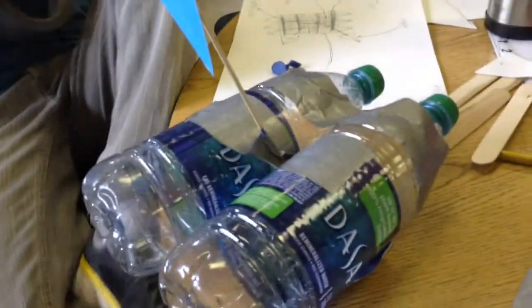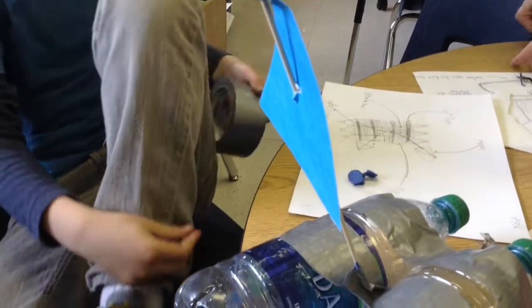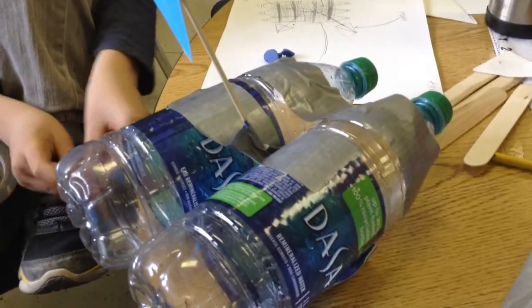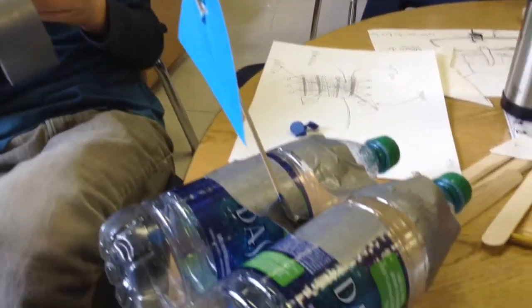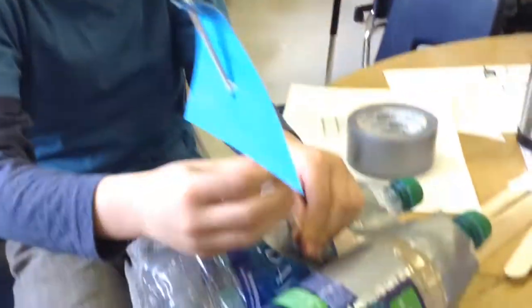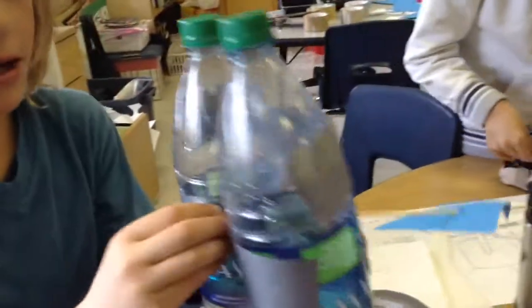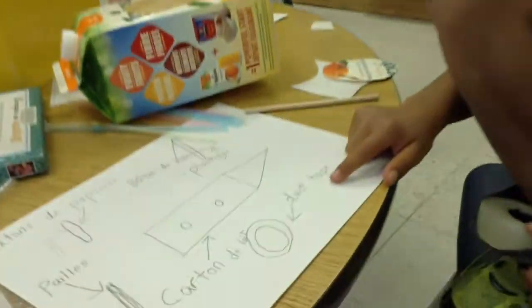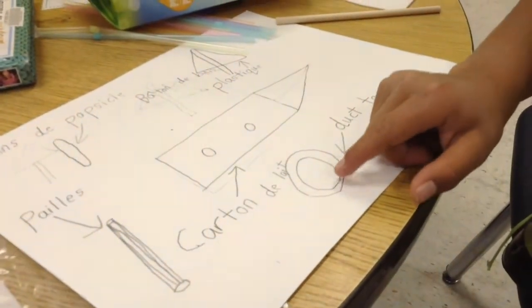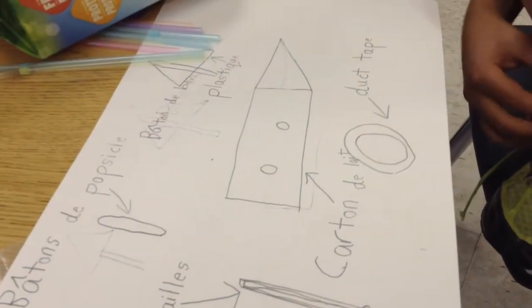The duct tape is where we put the two bottles of plastic, and the bowl is attached with a small toothpick and duct tape here too. It's a small toothpick and duct tape.